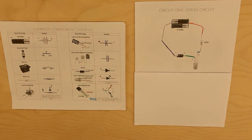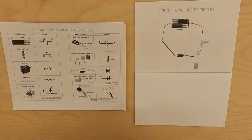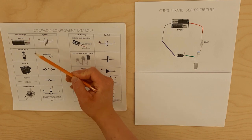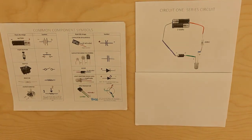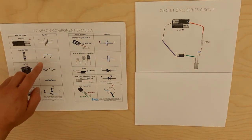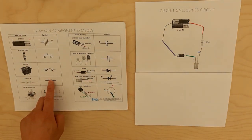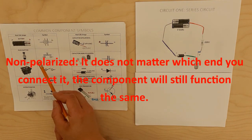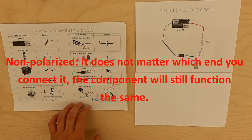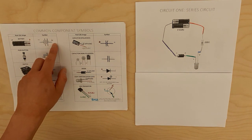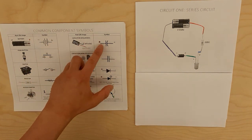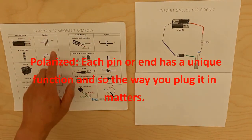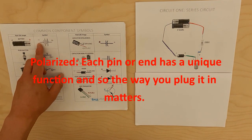That way I don't get overwhelmed. The first thing I'm going to do is convert the battery into its schematic symbol. Some symbols like our push button, switch, and resistor are non-polarized, meaning it doesn't really matter which one is positive and which one is negative. However, for our battery, polarized capacitor, or LED, they are polarized, meaning they have a plus and a minus.